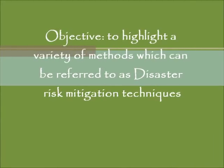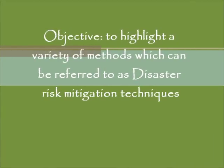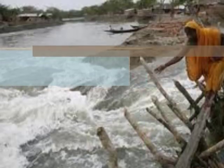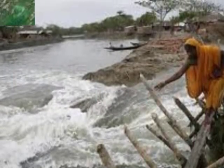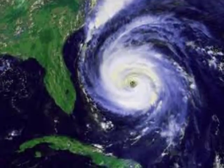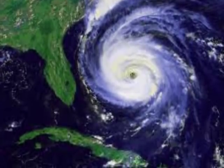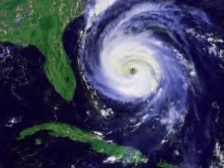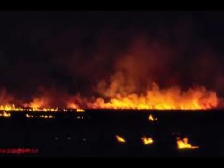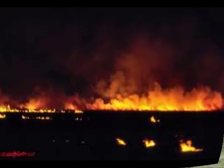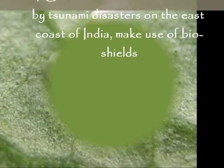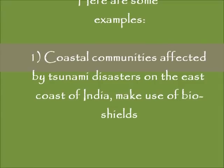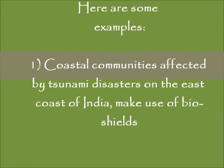The objective of this learning video is to highlight a variety of methods which can be referred to as disaster risk mitigation techniques. These are activities which can be used to reduce the risk of damage to land, crops and livestock caused by natural disasters such as bushfires, hurricanes, floods and invasion of pests. Here are some of the methods adopted by farmers in other parts of the world.